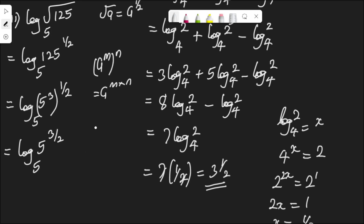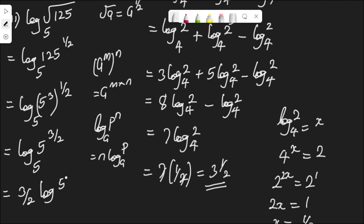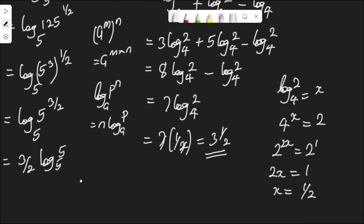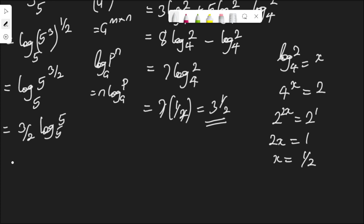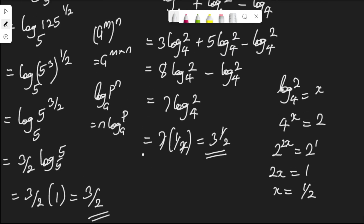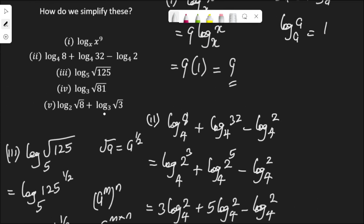Applying the log rule — log p to the power of n to base a equals n log p to base a — I have 3/2 times log 5 to base 5. And log 5 to base 5 is 1, so I have 3/2 multiplied by 1, which is 3/2. That is the answer for question 3.